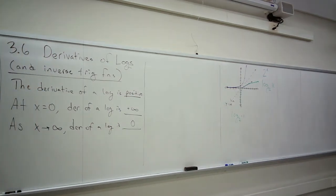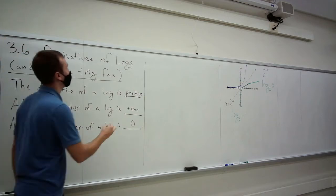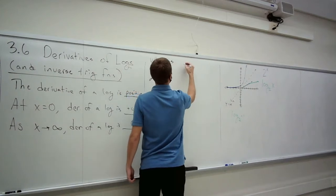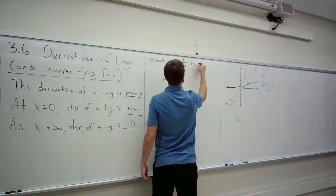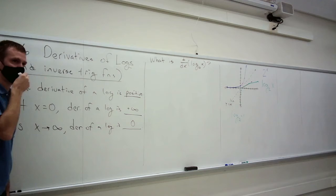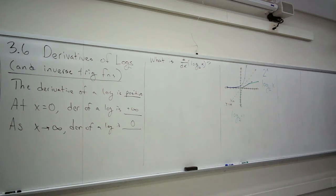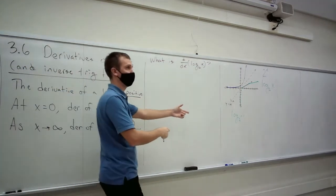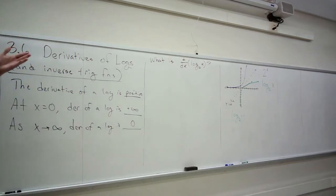So what is the derivative as a function? I can give you any base, but we're going to start with the simplest base we can think of — which is actually not a simple number at all. When we worked with exponentials, the first one we did was e, and the derivative of e to the x is e to the x. The natural log corresponds to the natural exponential. So instead of answering this in general to begin with, we're going to press pause and do the natural log first.